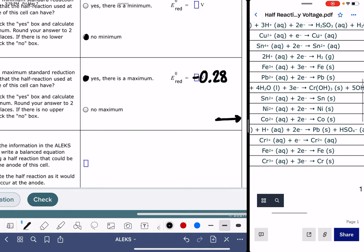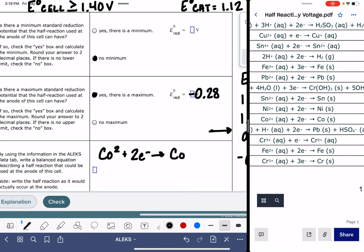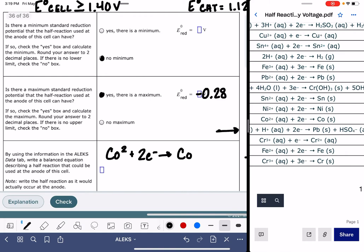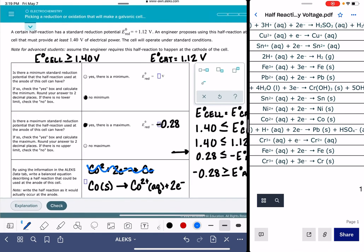And this is the Co²⁺ plus two electrons makes Co. Now, we do want to double-check that this is written in the correct order. It says write it in the order that it would actually occur at the anode. The anode is where the oxidation takes place, and oxidation is where we have the loss of electrons. So we do need to turn this one around. Co solid, and don't forget, we need to include the states. Cobalt solid makes cobalt 2+ aqueous plus 2 electrons. I'm going to cross this off, and this would work for this particular problem.